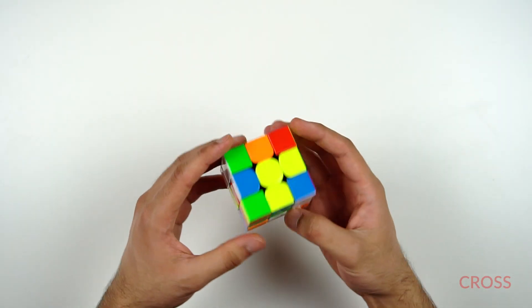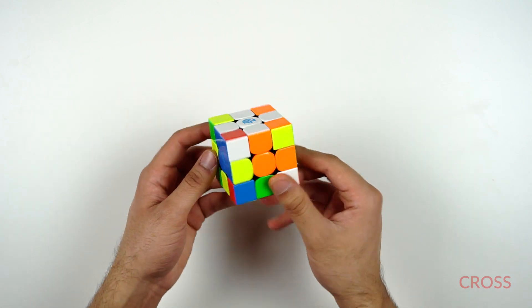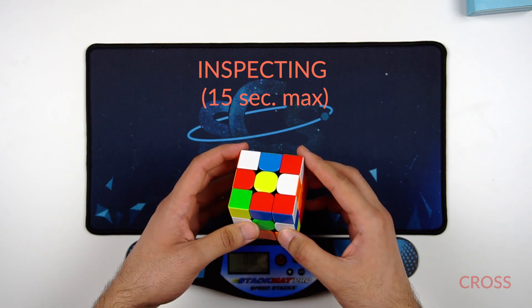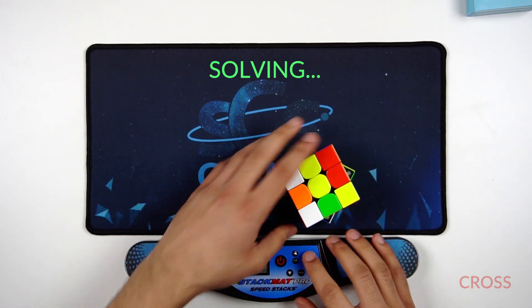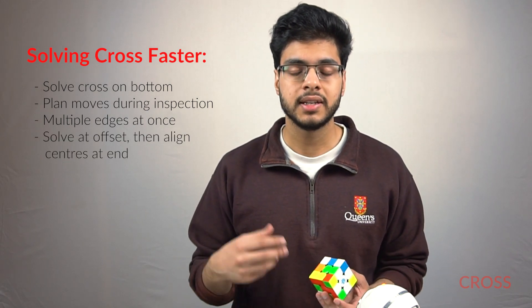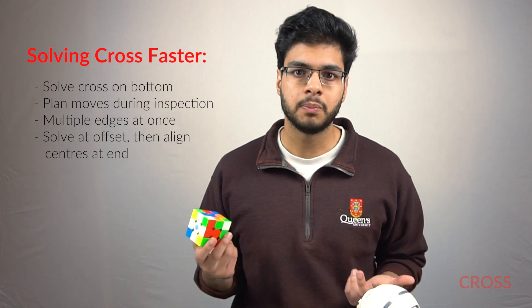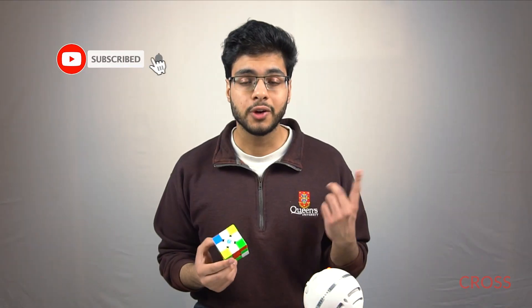But you may be wondering how a beginner's method tactic plays a role in an advanced speedcubing method. Essentially there are advanced techniques that you can apply to the cross to speed it up and solve it a lot faster. For example, using inspection time before you start solving to plan out your entire cross, you can solve multiple edges at once, you can solve the cross at an offset and then realign it at the end. It's basically the same thing as in beginner's method, but you just have to find more creative ways of solving it to get faster at it. You can check out this video to see how to get faster at the cross, or even just learn the beginner's method cross if you don't know how to do that yet.